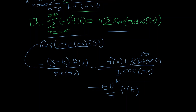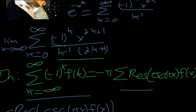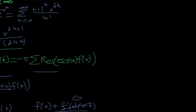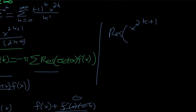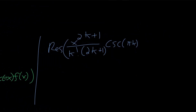Let's go ahead and use this formula. Our f(x) is everything in the sum minus the negative 1 to the k factor, so f(k) equals x to the 2k plus 1 divided by k factorial times (2k plus 1), where x here is just a constant. We need to find the residue of f(k) times cosecant(pi·k) at the poles of f. The only pole occurs when the denominator equals zero, which happens when 2k plus 1 equals 0 — that is, when k equals negative one half.